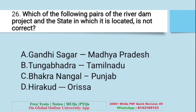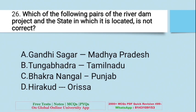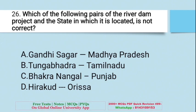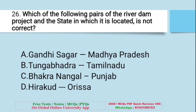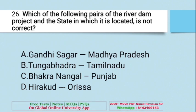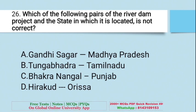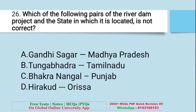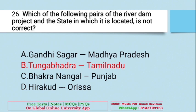Question: Which of the following pairs of river-dam project and state is not correct? A. Gandhinagar – Madhya Pradesh, B. Tungabhadra – Tamil Nadu, C. Bhakra-Nangal – Punjab, D. Hirakud – Orissa. The right answer is B — Tungabhadra, Tamil Nadu is a wrong pair.